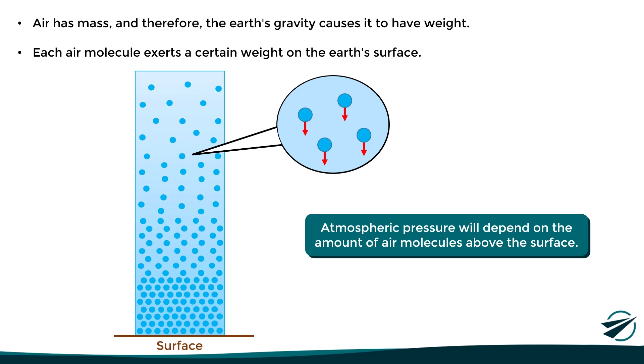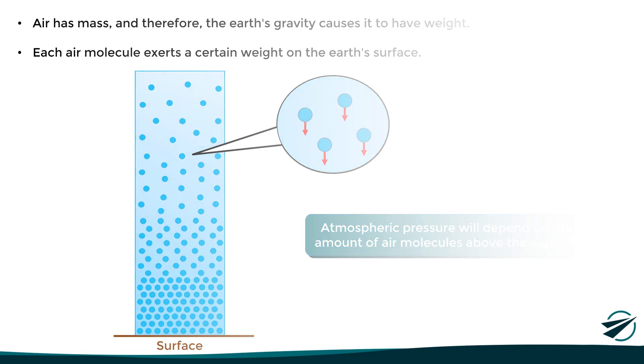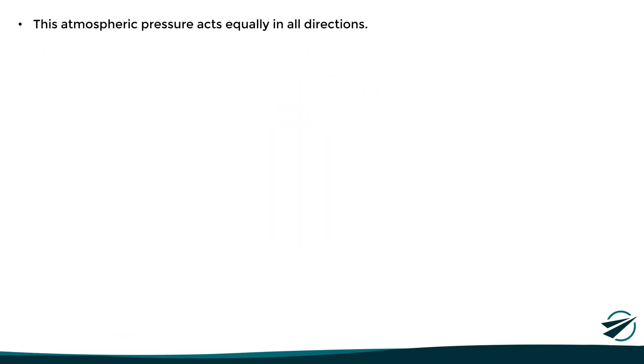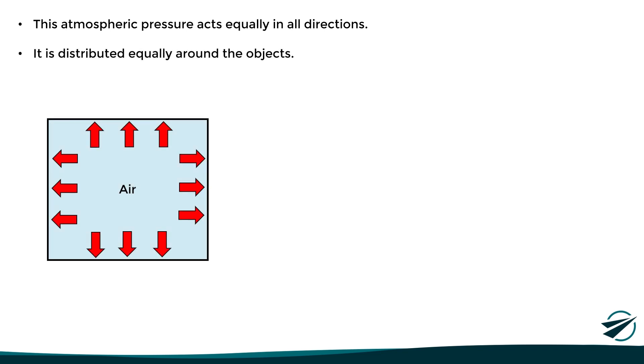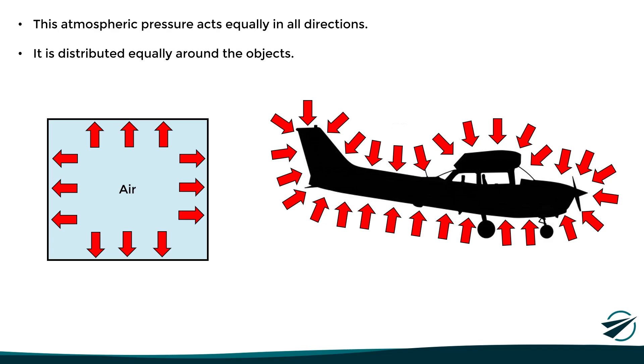Now, you might be wondering, if air has weight, why don't we feel it pushing us down against the surface? Well, the thing is that, as with all fluids, this atmospheric pressure acts equally in all directions. This means that it is distributed equally around all the objects inside the atmosphere, and this is the reason why we don't feel the atmospheric pressure.